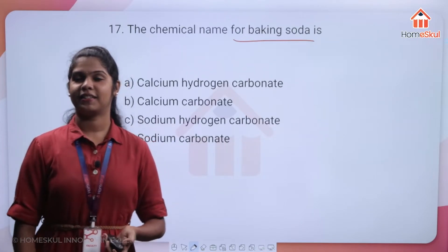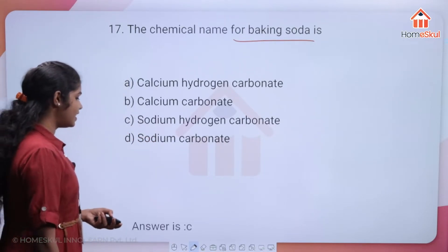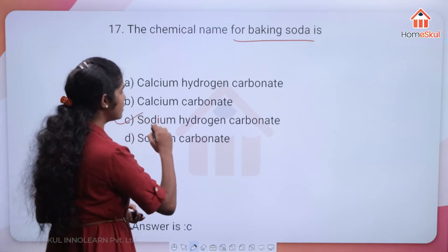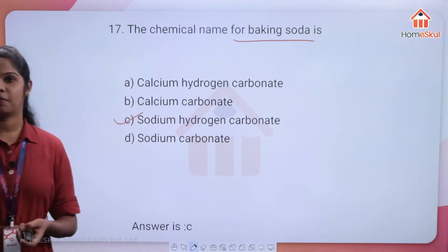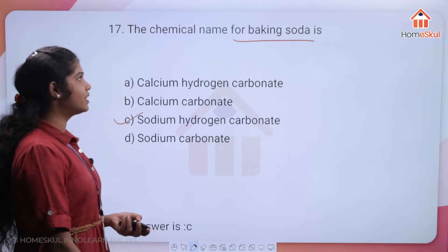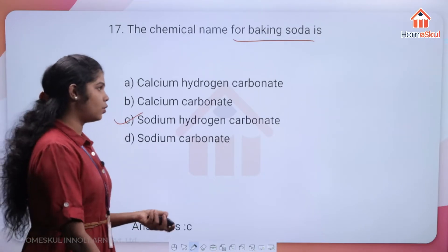C is the right answer — sodium hydrogen carbonate (NaHCO3) is the chemical name for baking soda.